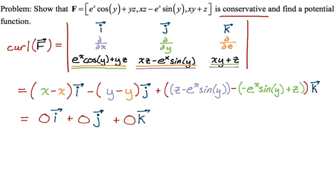We got a curl of zero, which means we're definitely dealing with a conservative vector field. Since it's conservative, we can find a potential function — so let's do that.